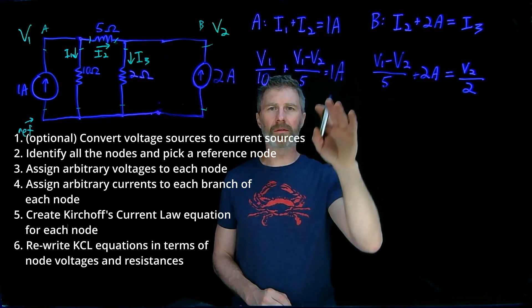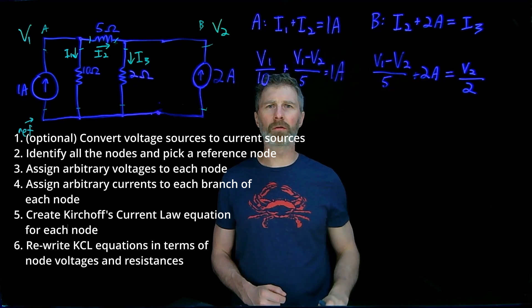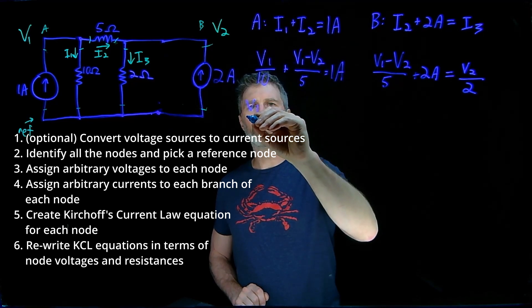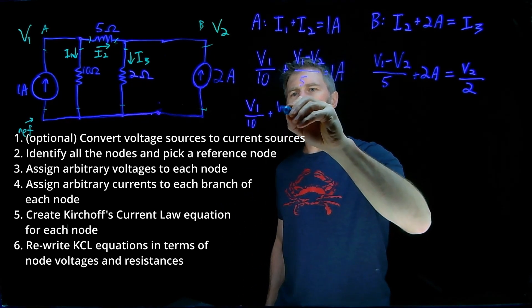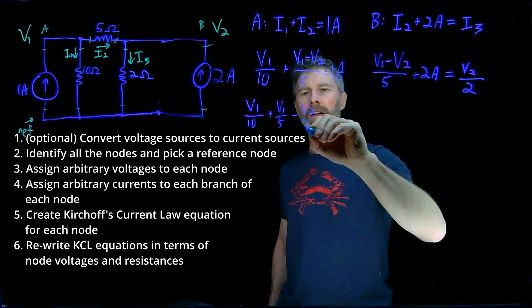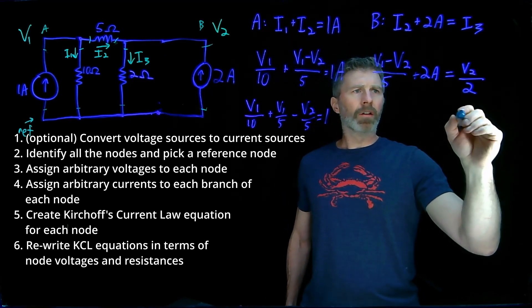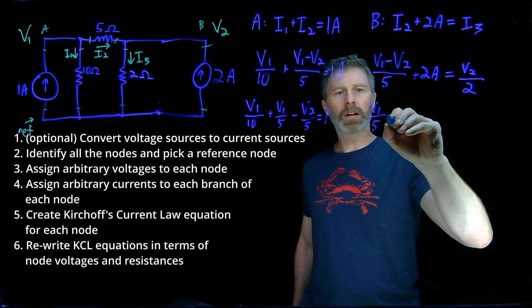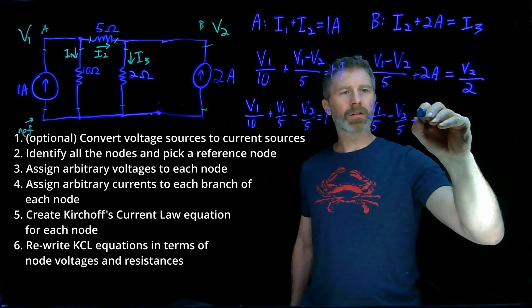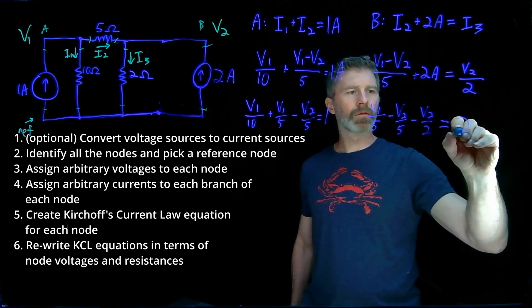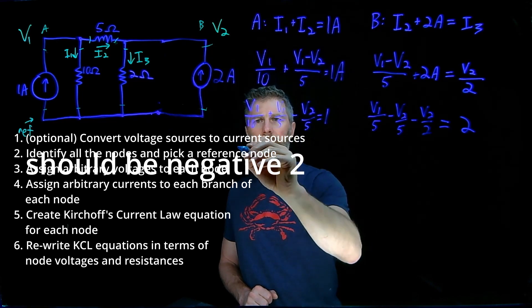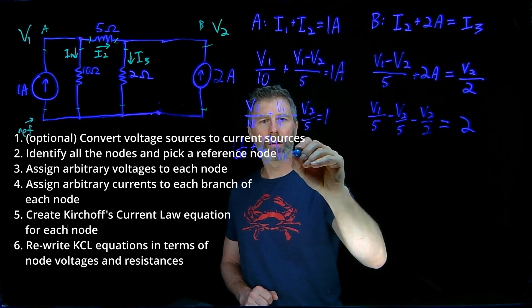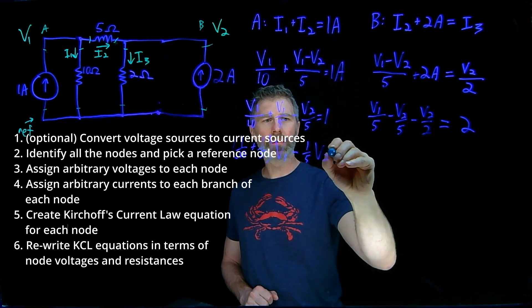Now that we've written the KCLs in terms of the voltages and resistors, we can group terms and put them into a form that's easier to solve. What we have is V1 over 10 plus V1 over 5 minus V2 over 5 equals 1. Then we can go 1 over 10 plus 1 over 5 times V1 minus 1 over 5 V2 equals 1.